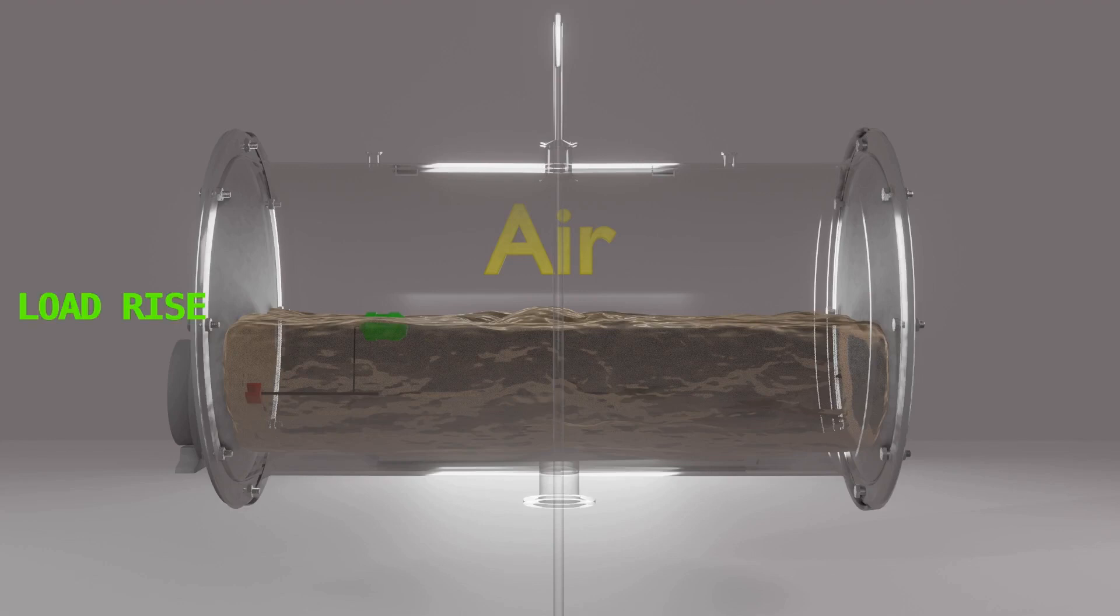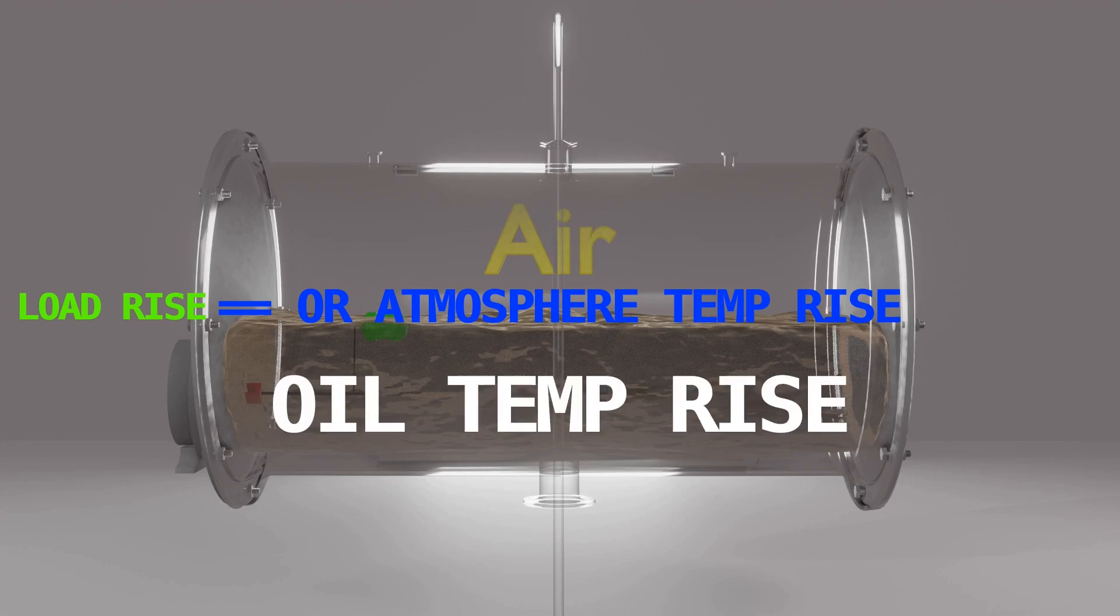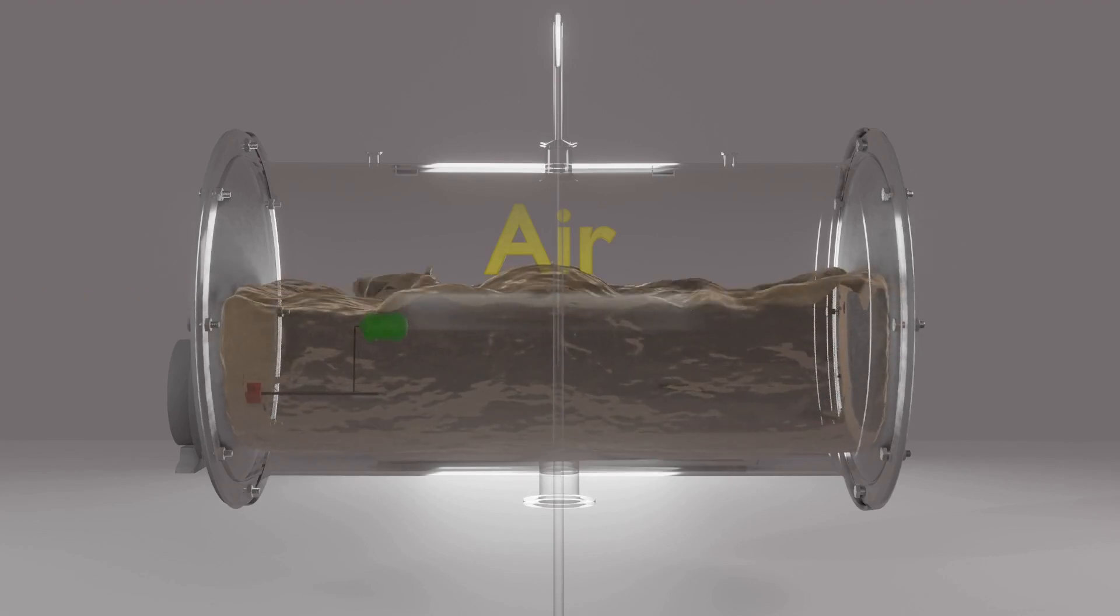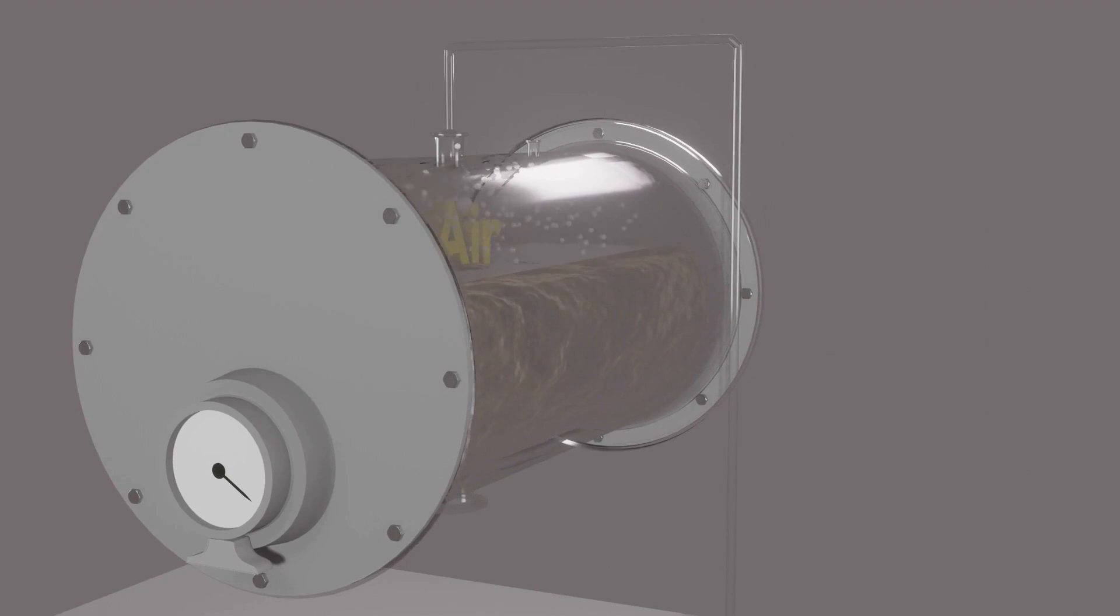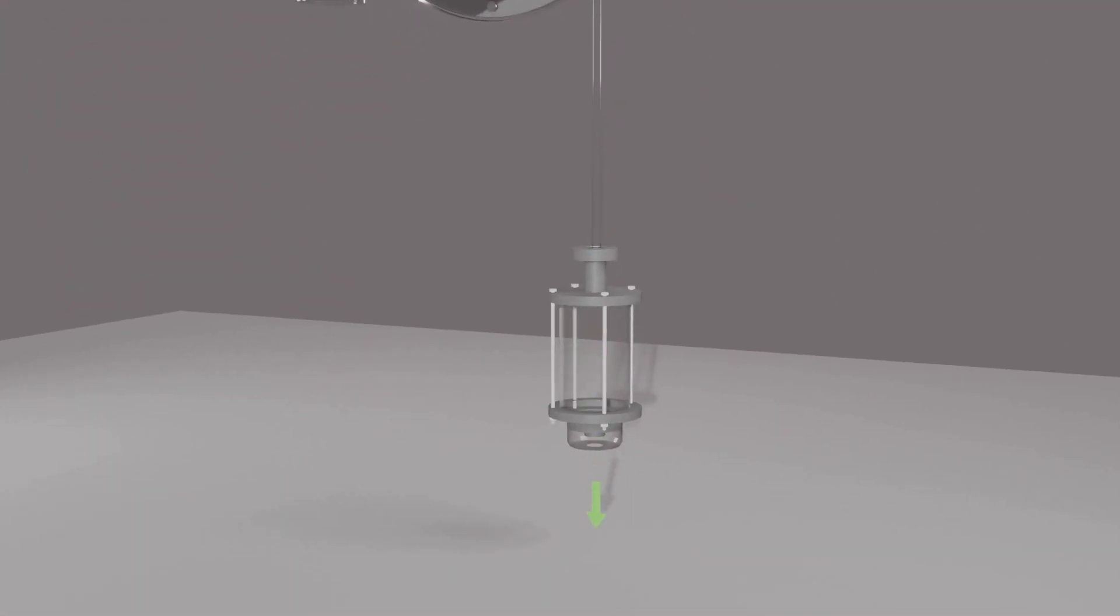Now suppose the load on transformer increases or atmospheric temperature rises, then it will raise the temperature of oil. Due to that, oil expands over the empty space as much as required, and the air available at empty space gets out from this breathing pipe through the breather to atmosphere, as you see here.